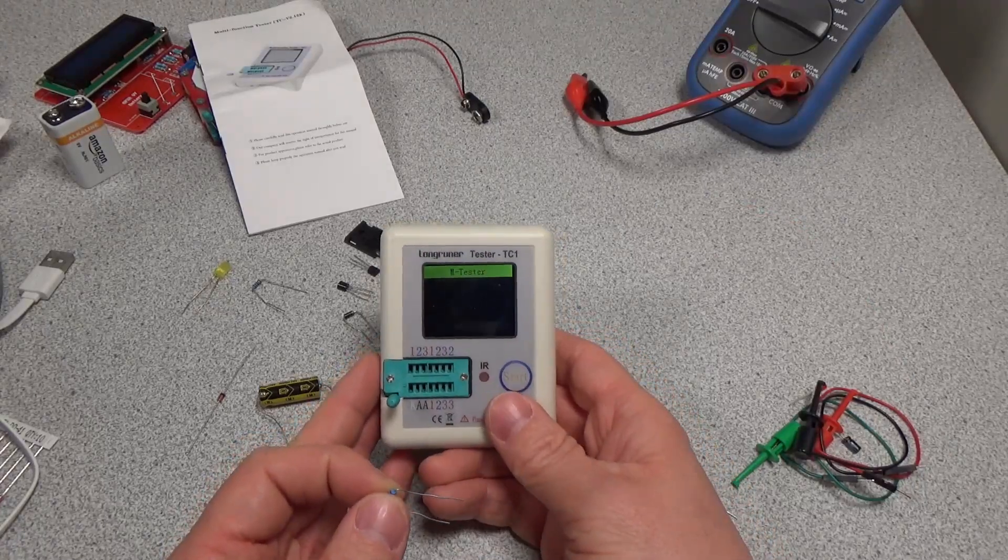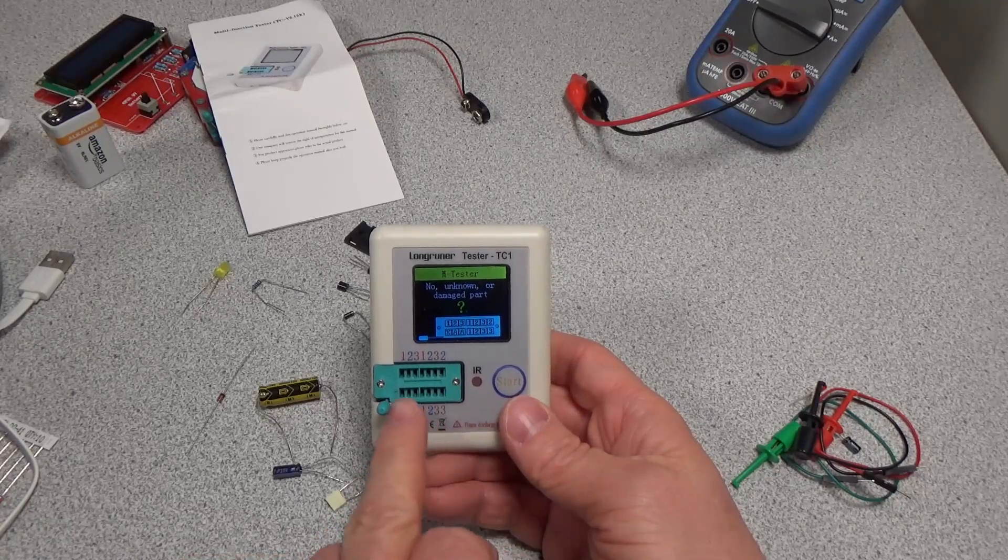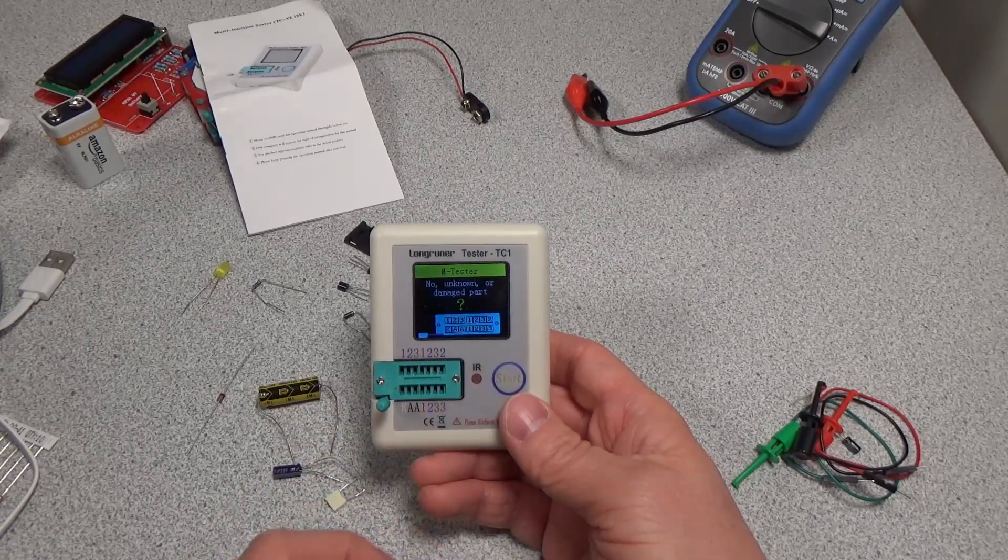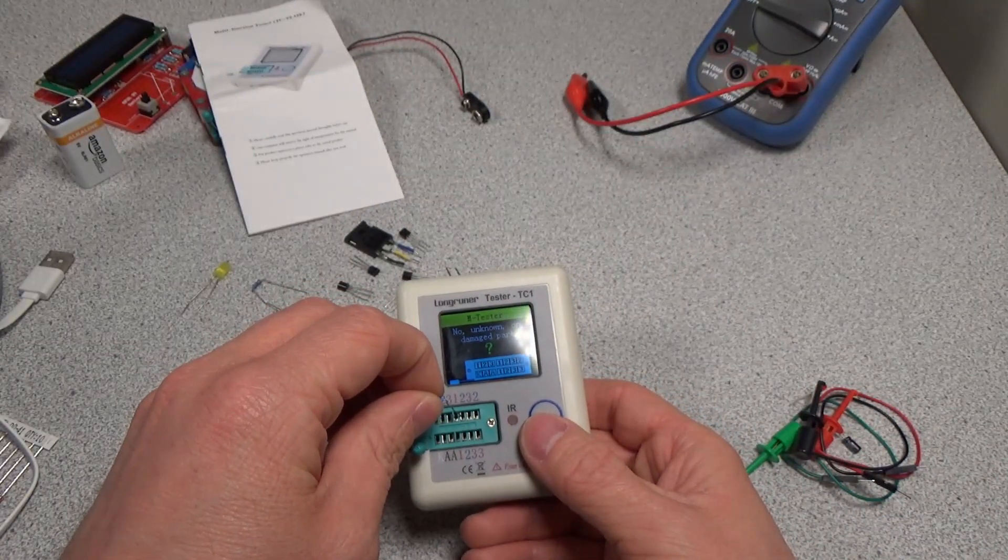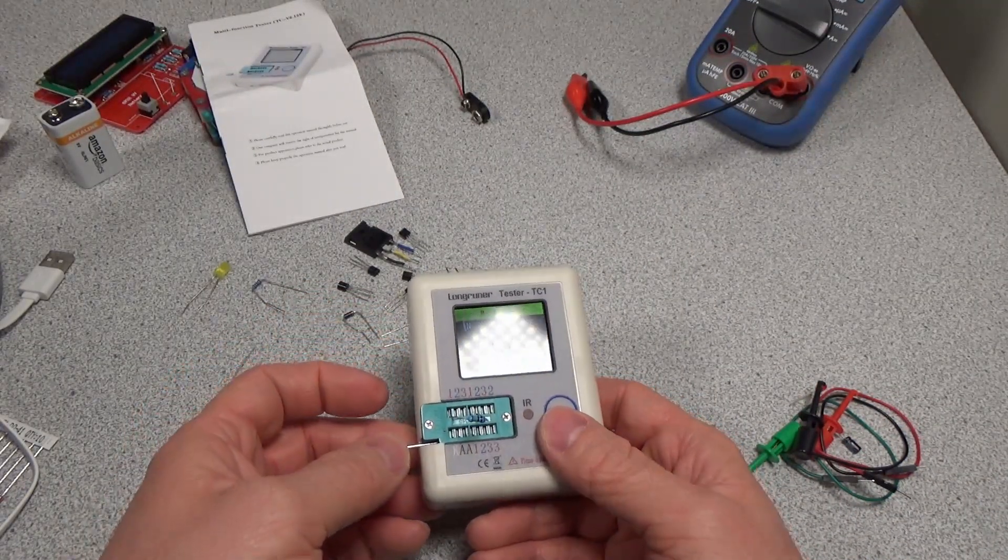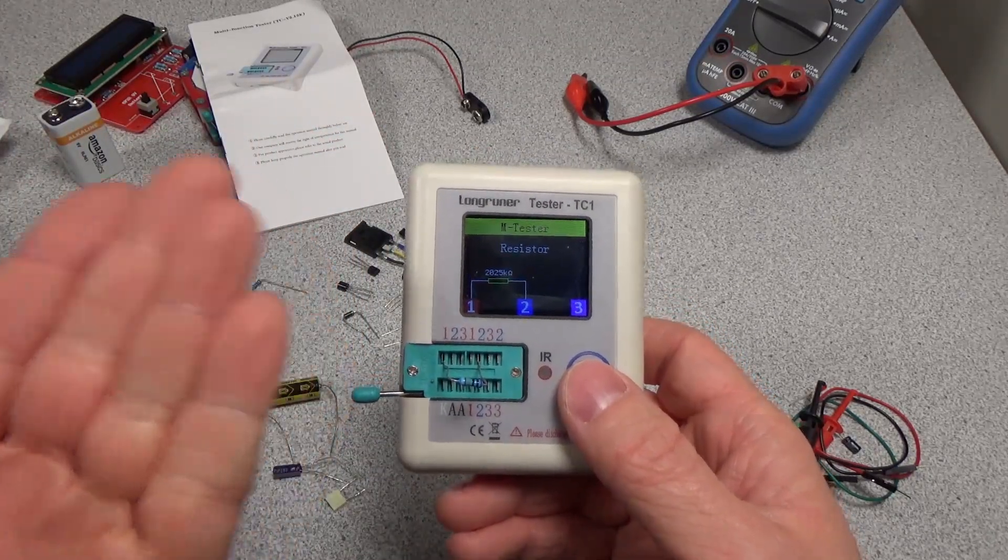So we'll go ahead and turn this thing on. When I start it up, it's testing already. They have a bunch of different markings in here for different components you can put in. So we'll go ahead and put this 2 megaohm resistor in, push the button, should be able to get a reading on that. There it is, 2.025k ohm. So it's off a little bit, but really not bad.